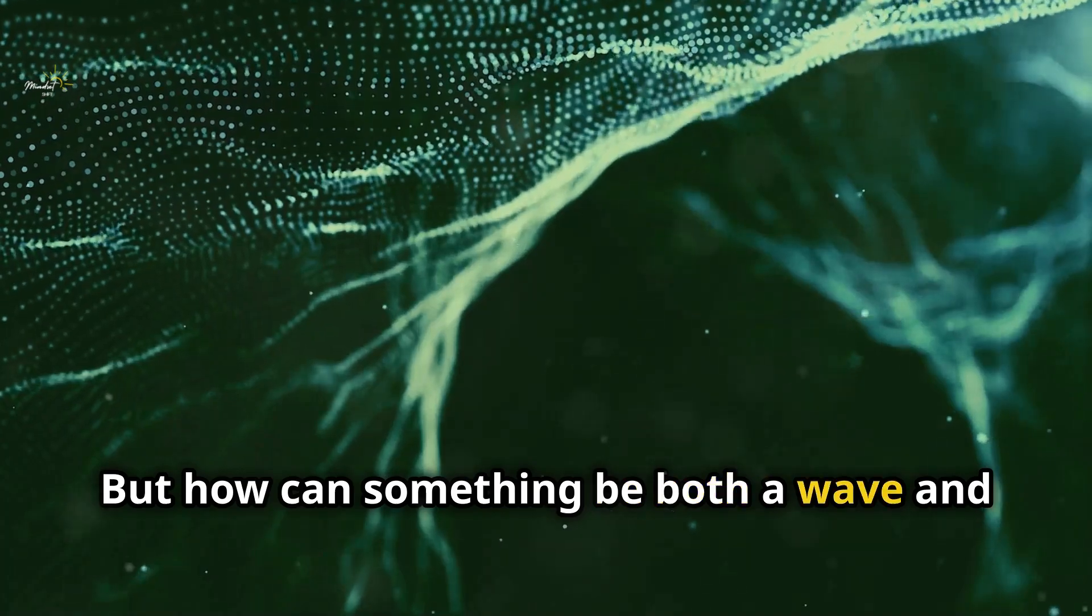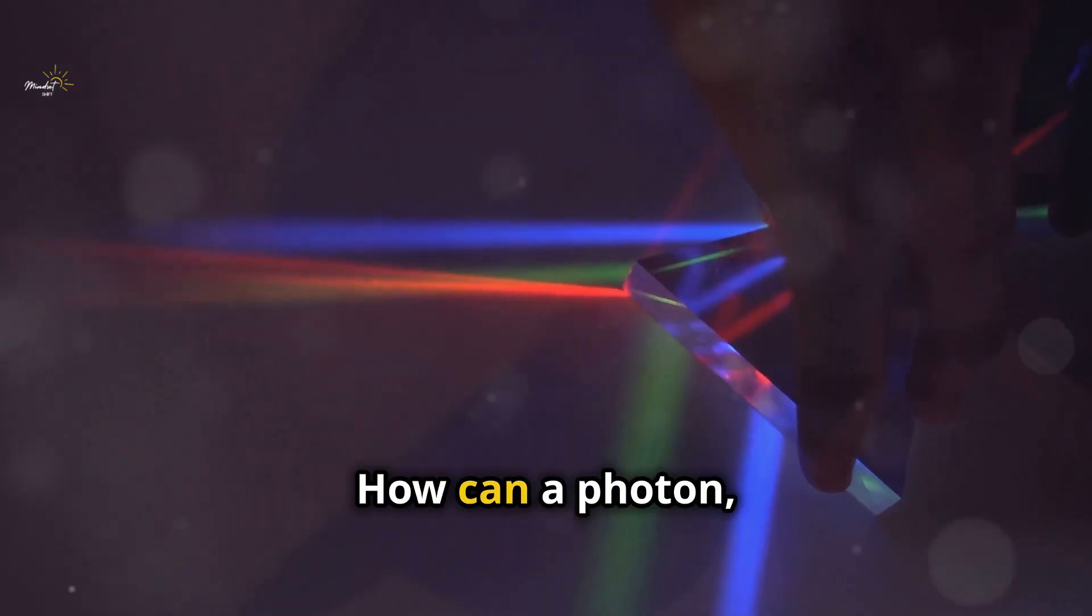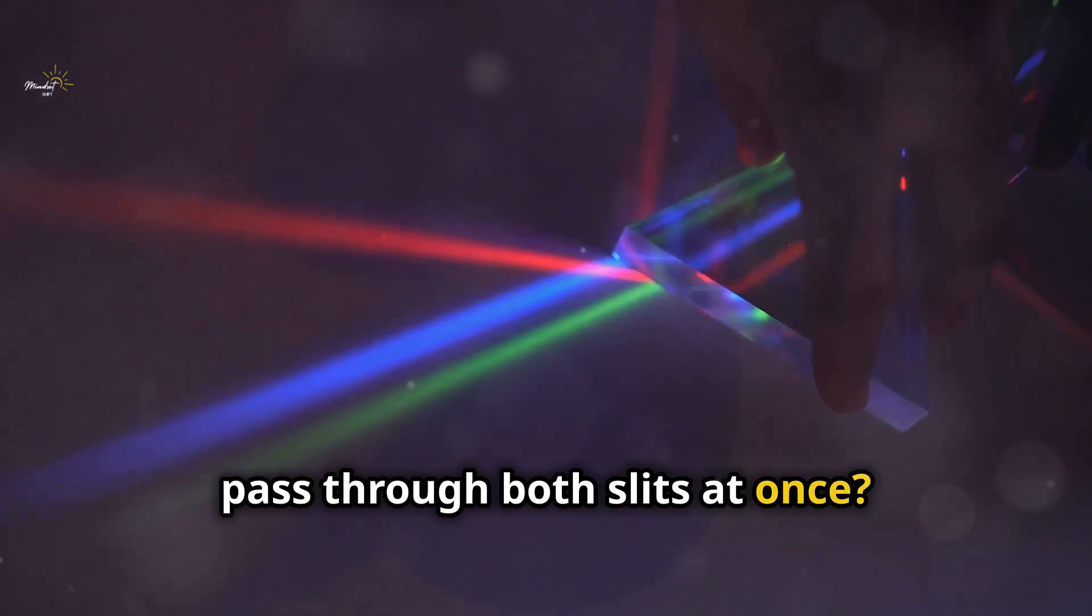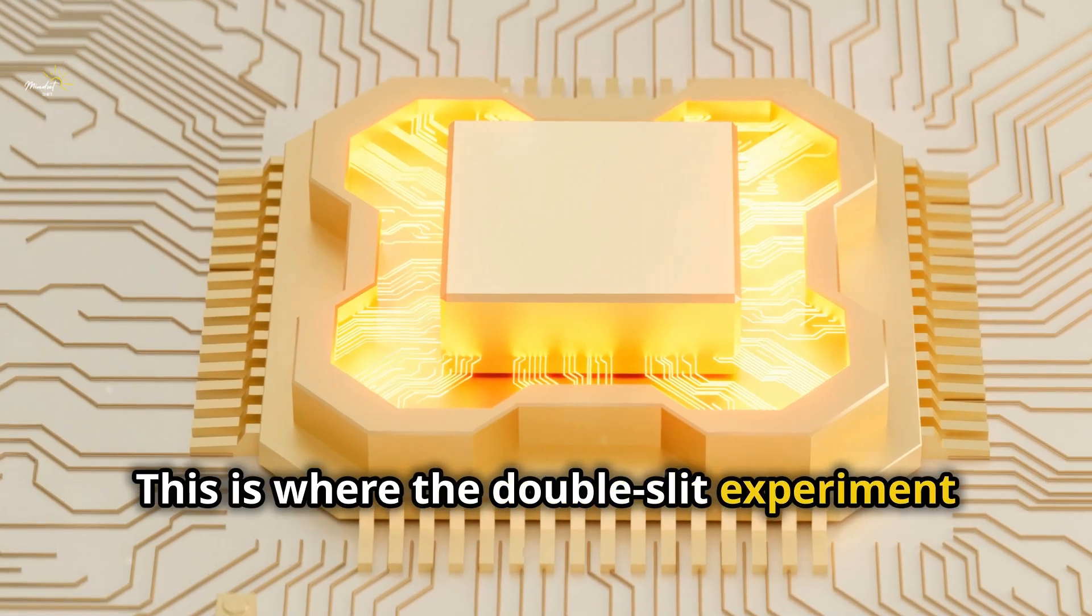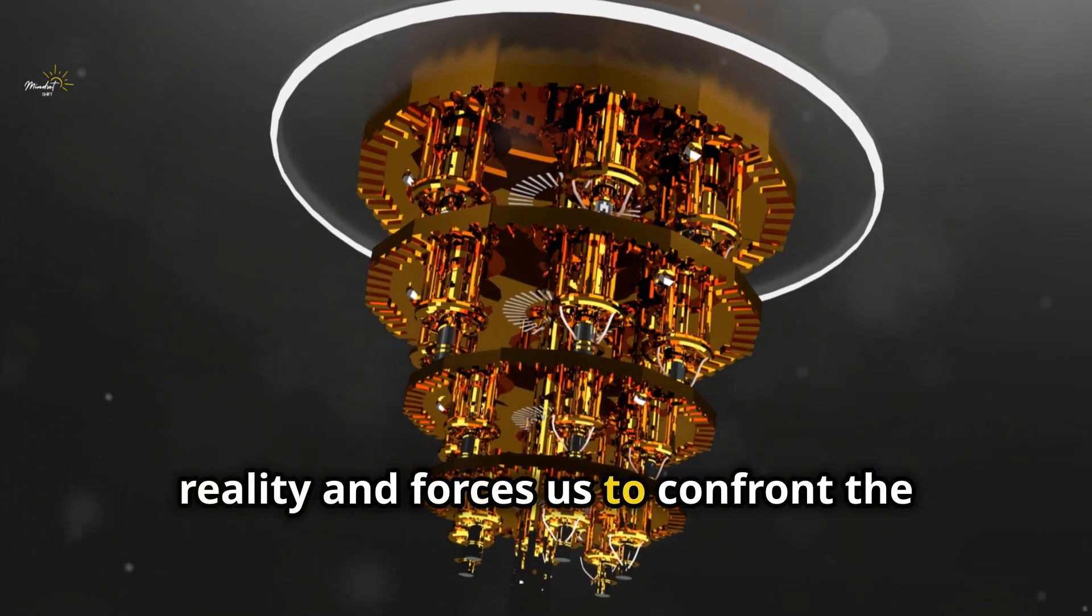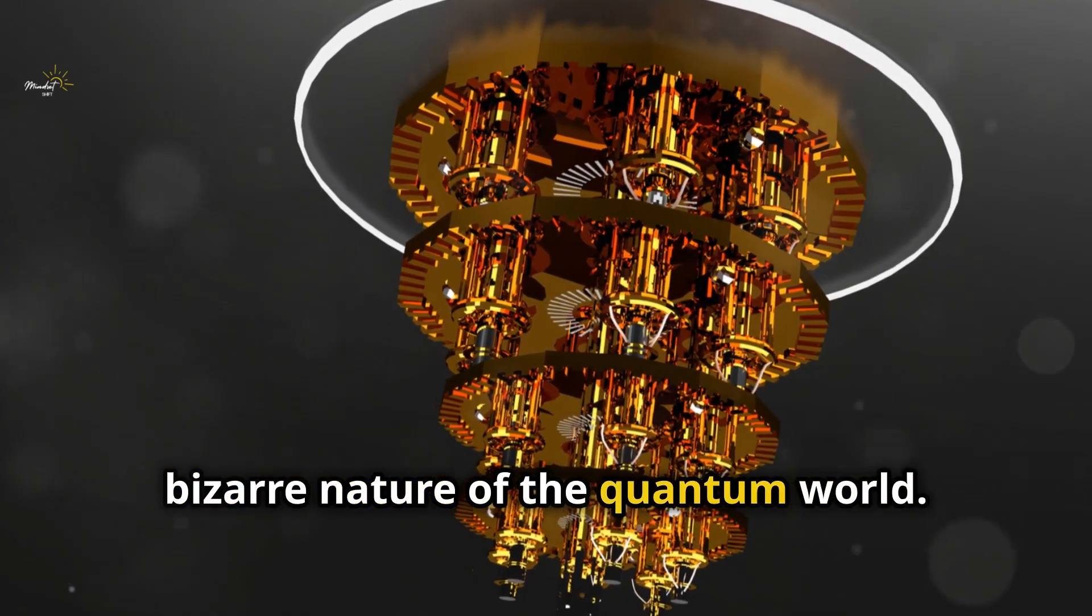But how can something be both a wave and a particle? How can a photon, a single entity, pass through both slits at once? This is where the double-slit experiment starts to challenge our intuitive grasp of reality and forces us to confront the bizarre nature of the quantum world.